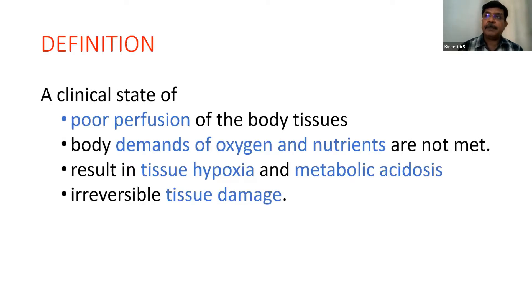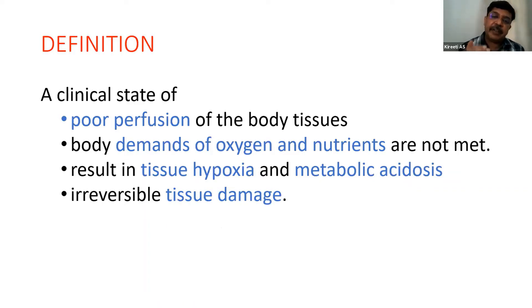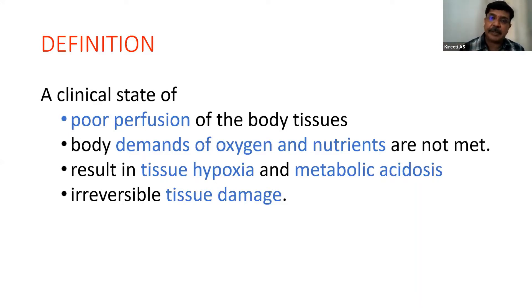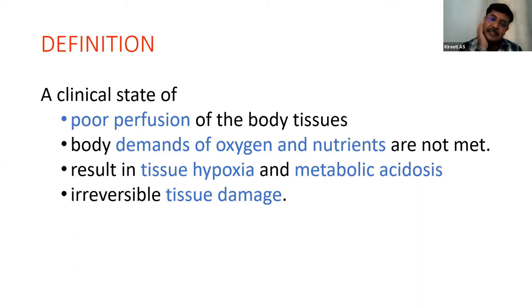By definition, shock is poor perfusion of body tissues. When perfusion decreases, the blood supply to body tissues is hampered. Oxygen supply to tissues decreases and nutrients are not adequately delivered, since nutrients reach cells through blood supply. At the same time, metabolic end products that are normally removed by blood also accumulate, causing tissue hypoxia.